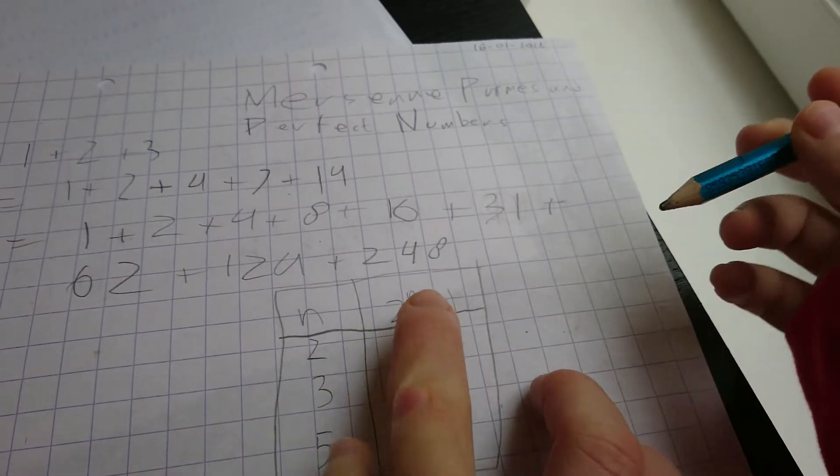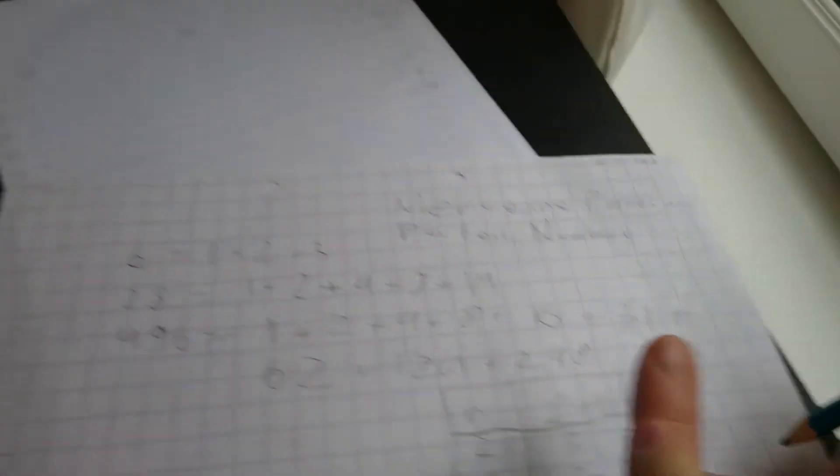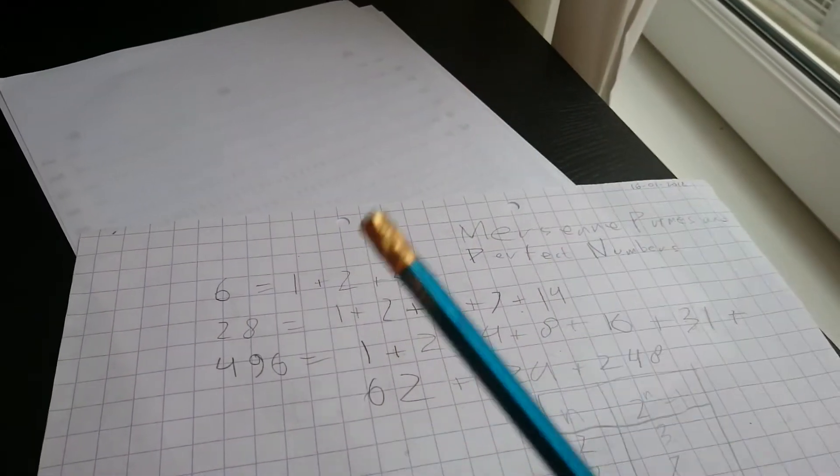That's like 2 to the 2nd minus 1 is 3. Or, better known as 2 squared. Yeah.